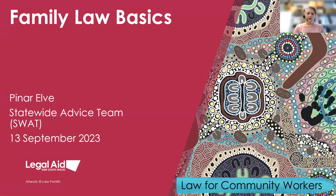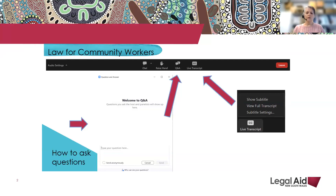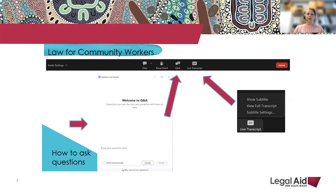Before we begin the webinar, I'll explain how to use the control panel in Zoom in case some of our audience haven't used Zoom before. You will have a control panel on your screen. Please use the Q&A box to ask any questions. Once you click on the Q&A box, it will expand and you can type your questions in there at any time, and we'll answer questions at the end of the webinar. If for any reason we don't get to your question, if you're happy to send your question by email, we can respond after the webinar has finished.